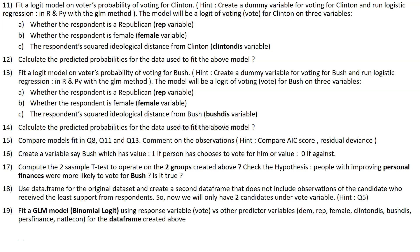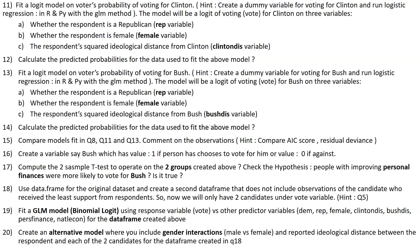Question eighteen asks to fit a GLM binomial logit model using the response variable 'vote' with predictor variables: Democrat, Republican, female, Clinton distance, Bush distance, personal finance, and national economy — using the dataframe created in question seventeen. The final question asks to create an alternative model including a gender interaction (male vs. female), reported ideology, and ideological distance between the respondent and each of the two candidates.